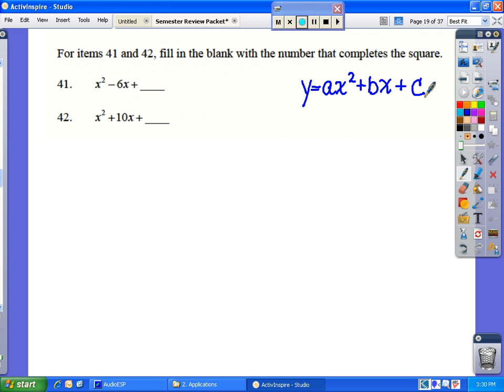In order to find that number, what we do is we take the b value, in this case negative 6, we divide it by 2 and we square it. Negative 6 divided by 2 is negative 3 squared is positive 9, and 9 will be the c value that completes the square.